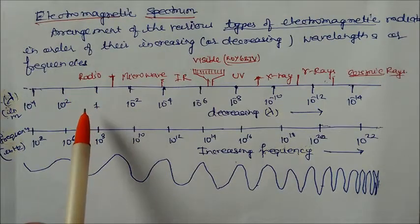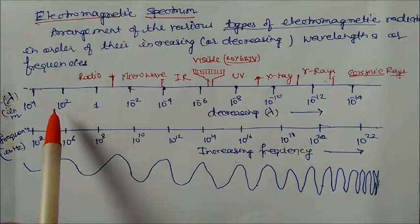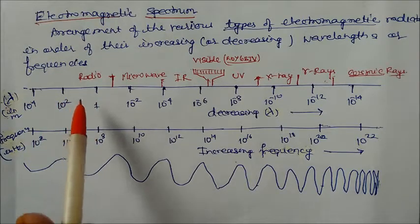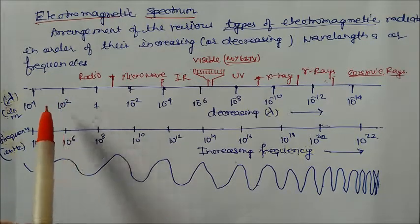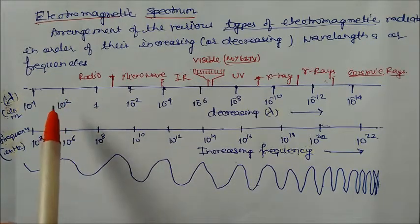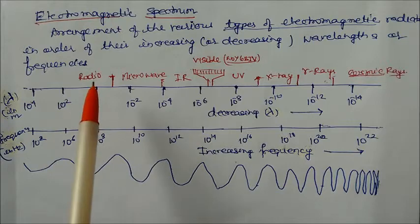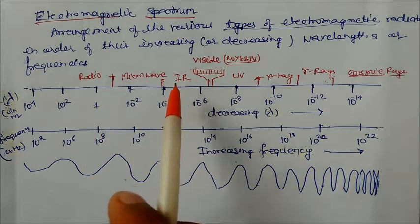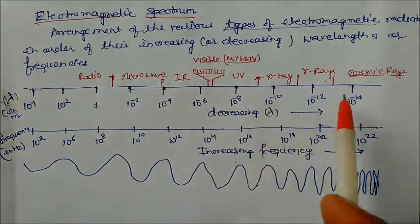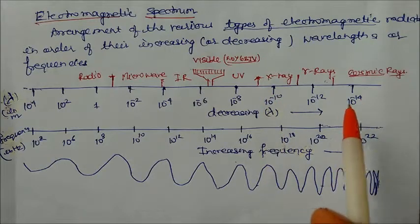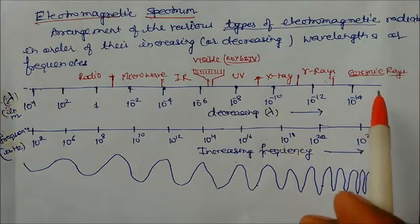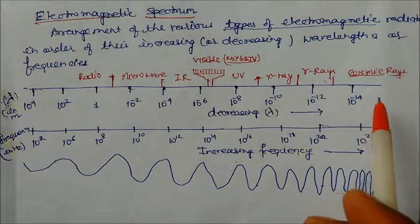The wavelength of radio waves can be 100 meters, 1000 meters, even one kilometer — a very big wavelength. As we go towards the right, the wavelength decreases. Cosmic rays have a very small wavelength of 10 to the power minus 14, so it is in decreasing order.